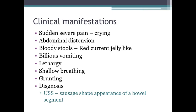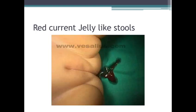Clinical manifestations of intussusception include sudden and severe pain — so severe the child cries intensely — abdominal distension, and bloody stools described as red currant jelly-like stools. There is also bilious vomiting, and the child becomes lethargic with shallow, superficial breathing and grunting. To diagnose, an ultrasound scan is performed and shows a sausage-shaped appearance of the invaginated bowel segment.